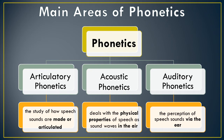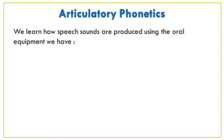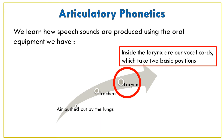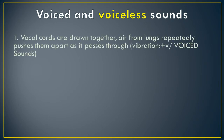In articulatory phonetics, we investigate how speech sounds are produced using our oral equipment. The process starts with air pushed out by the lungs, up through the trachea to the larynx. Inside the larynx, at the location of our vocal cords, which may take two basic positions: the first position is when our vocal cords are drawn together, and the air from the lungs repeatedly pushes the vocal cords apart as it passes through, creating vibration.